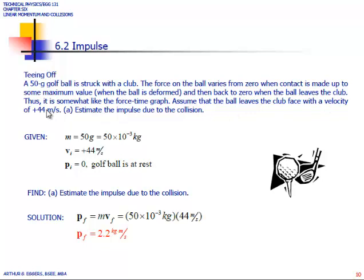How long did it take for this process to happen? How much force was there in this process due to the momentum? So, let's read the stem. They say that the golf ball itself is a 50-gram golf ball. It's struck with a club. The force on the ball varies from zero when contact is made up to some maximum value when the ball is deformed. Then, back to zero when the ball leaves the club, somewhat like the force-time graph. Assume that the ball leaves the club face with a velocity of 44 meters per second. First, they want us to estimate the impulse due to the collision.